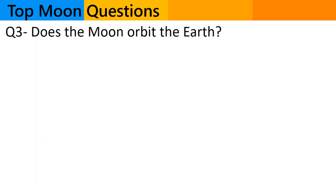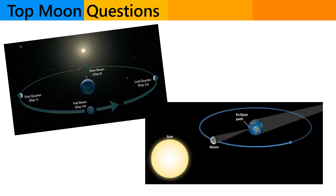Question number 3. Does the moon orbit the earth? Yes, the moon does orbit the earth. The moon is earth's only natural satellite and it revolves around the earth in an orbit.